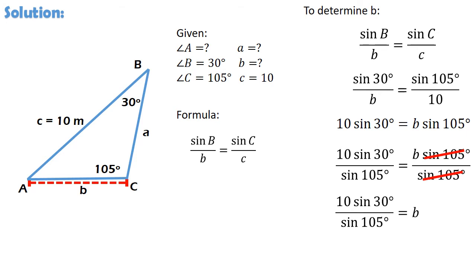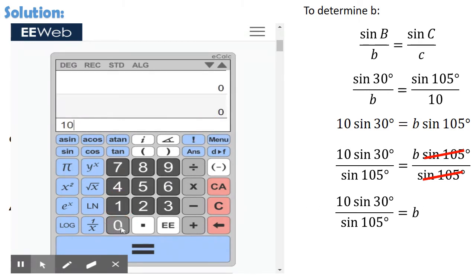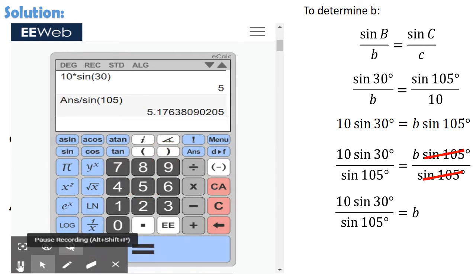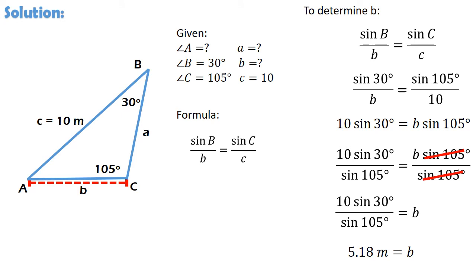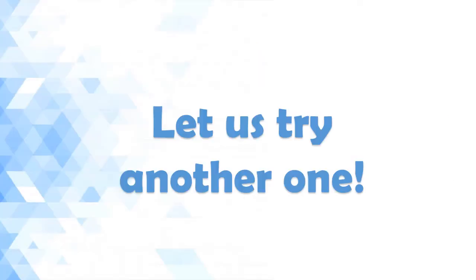Now, gamit ang scientific calculator, pwede natin makuha ang exact value ng b. Kailangan lang natin siguraduhin na nakadegree mode ito bago mag-input ng mga numbers. So, pressing 10 times sin 30 degrees is equal to divided by sin 105 degrees. At ang nakuha nating sagot ay 5.18 rounded off to the nearest hundredths. At dahil side ang hinahanap natin, huwag kalimutan ang unit of measurement na ginamit sa problem. Kaya, ang value ng b is equal to 5.18 meters. Therefore, ang layo ng tent ni Alex at Carl ay 5.18 meters. Well done! Nasolve natin ang problem 1.